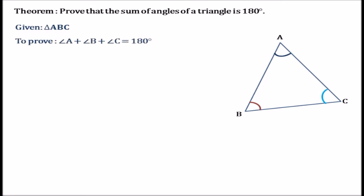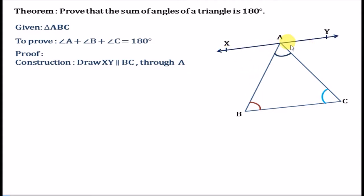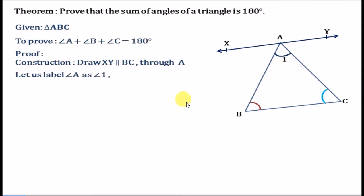In order to prove this we will do a construction: drawing a line parallel to one of the sides of triangle ABC. Here we are drawing a line XY through vertex A such that it is parallel to side BC. We could also have drawn a line through B parallel to AC, or through C parallel to AB. We have decided to draw line XY through A parallel to BC. Now let us label angle A as angle 1.